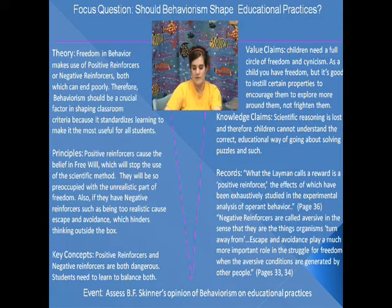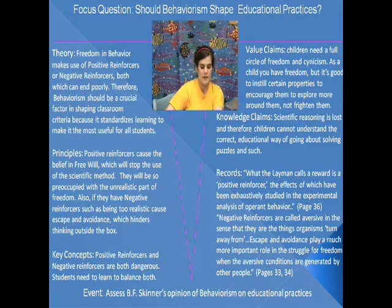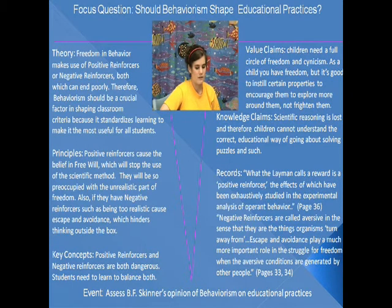Negative reinforcers are called aversive in the sense that they are the things organisms turn away from. Escape and avoidance play a much more important role in the struggle for freedom. Theory: Freedom in behavior makes use of positive reinforcers or negative reinforcers, both of which can end poorly.